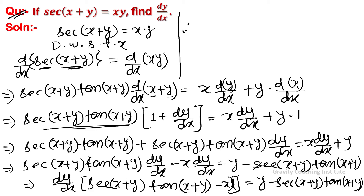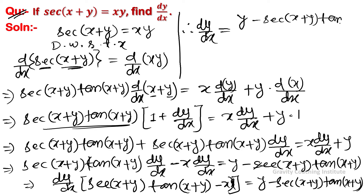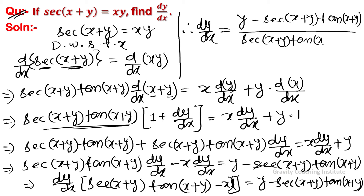Therefore, dy/dx = [y − sec(x+y)·tan(x+y)] / [sec(x+y)·tan(x+y) − x].